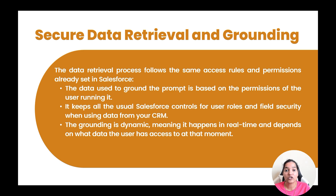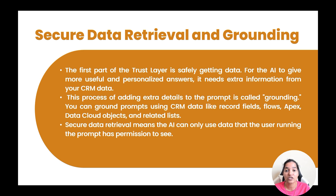So this is the meaning of secure data retrieval and grounding. Grounding is the process of adding additional details to the prompt. You can ground prompts using CRM data like record fields, flows, Apex, Data Cloud objects, and related lists. This grounding depends on what kind of access you have, what level of security you have, what field-level security you have, and what permissions you have. It does not happen at a system context — it happens at a user context.